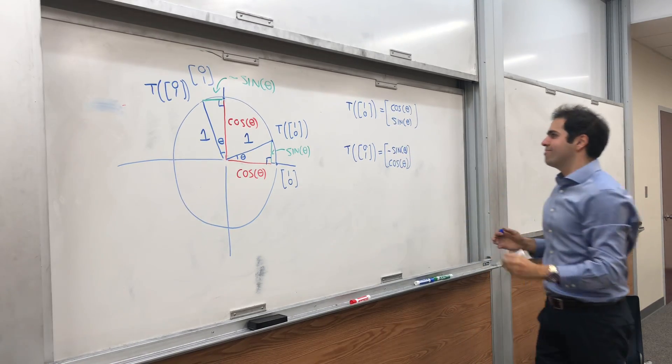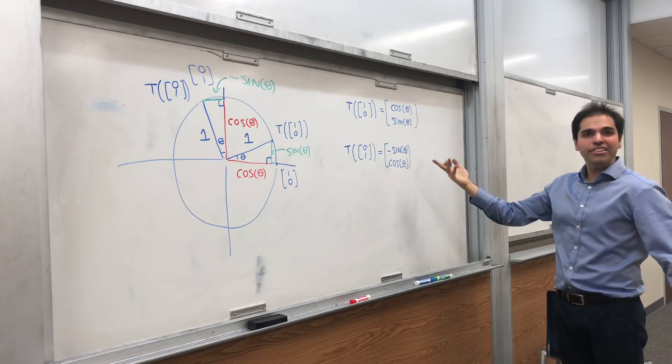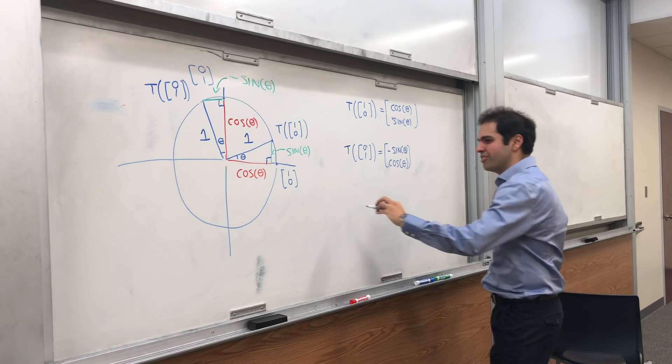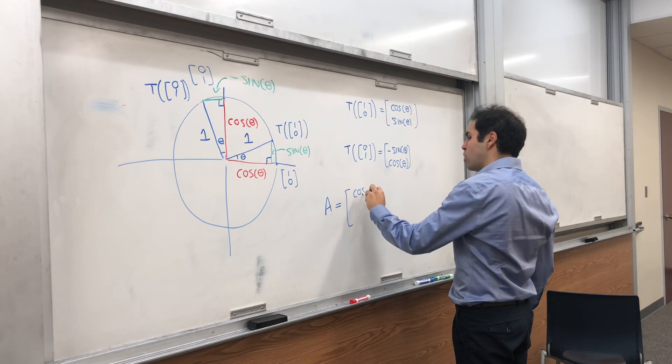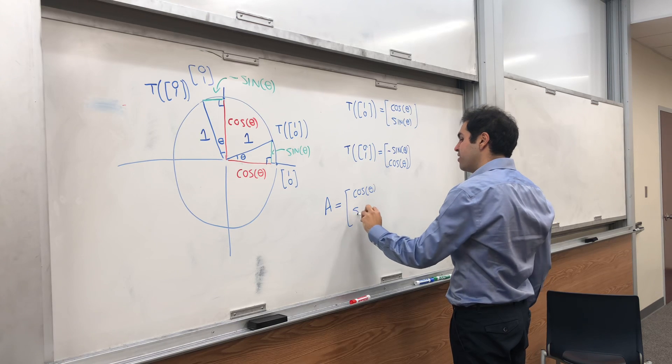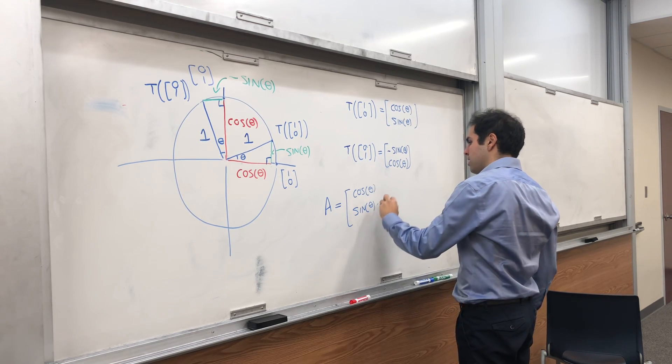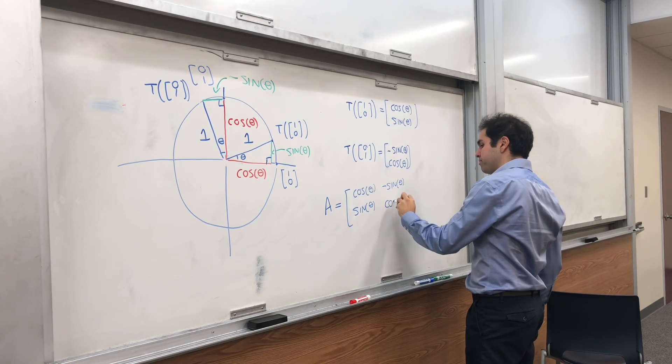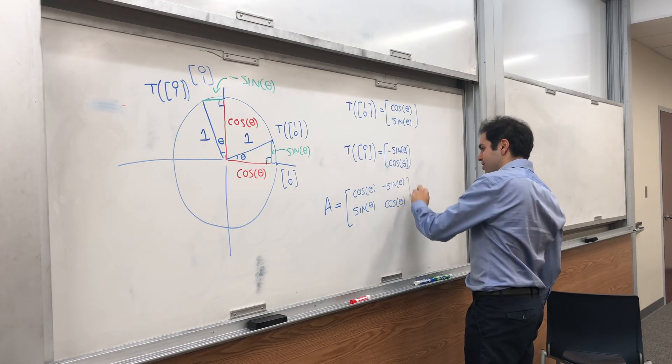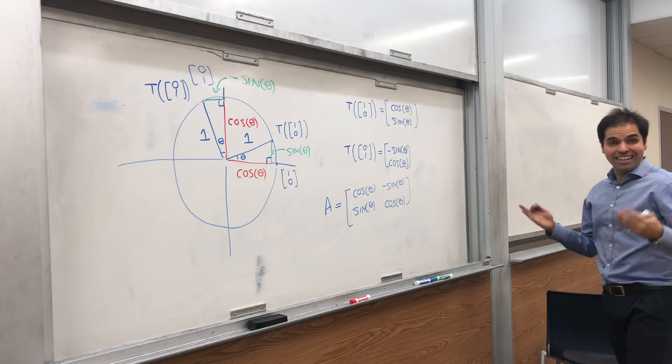Cool. And finally, how do you get the matrix of your linear transformation? You just put the two columns together. So cosine theta, sine theta, and minus sine of theta, cosine theta. Ta-da!